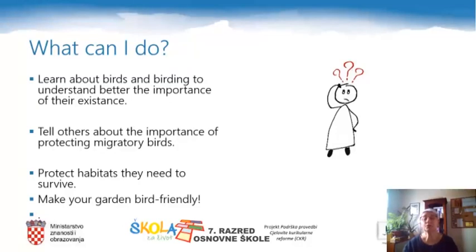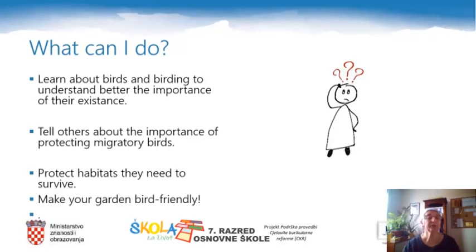What can you do? You can learn about birds and about birding — which is birdwatching — and you will understand better the importance of the existence of birds. You can tell others about how important protecting migratory birds is. You can protect habitats, and if you have a garden, you can make your garden more bird-friendly. That can help.